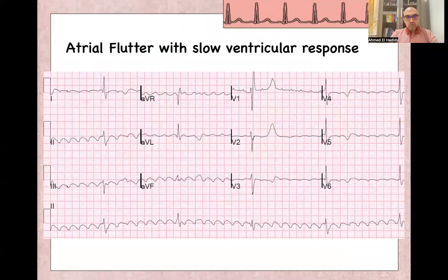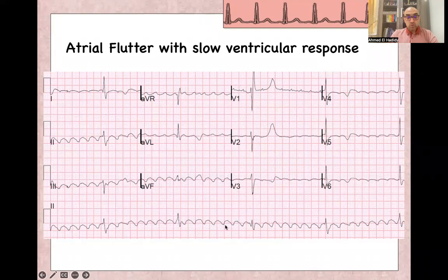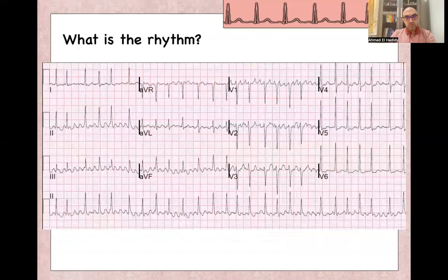There is also atrial flutter with a slow ventricular response. In this ECG, the heart rate is around 30 beats per minute with flutter waves very obvious — usually seen when the patient is already on medication like a beta-blocker or has digitalis toxicity.